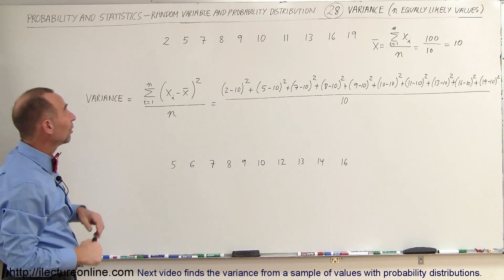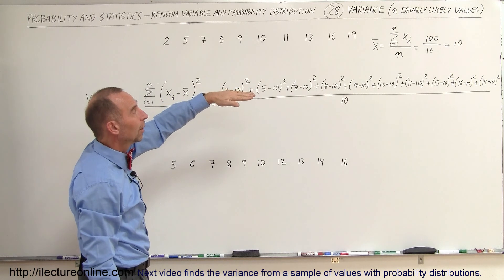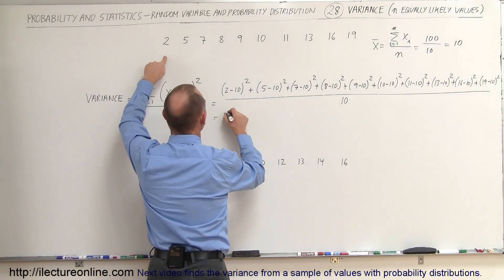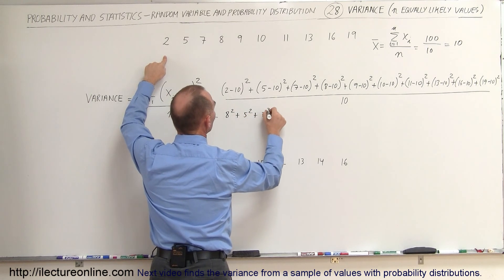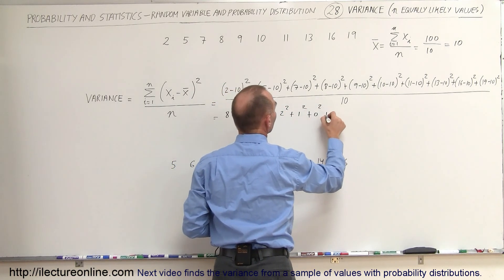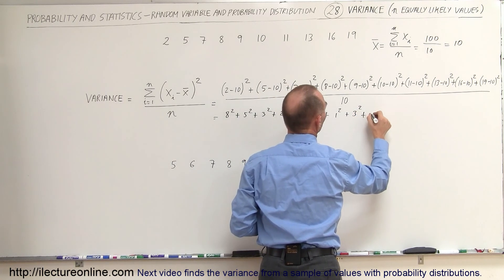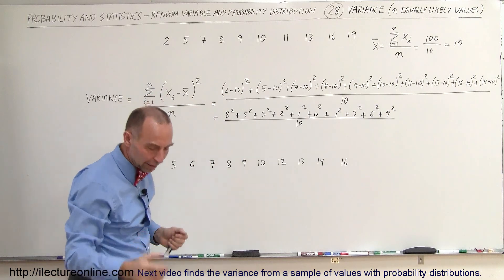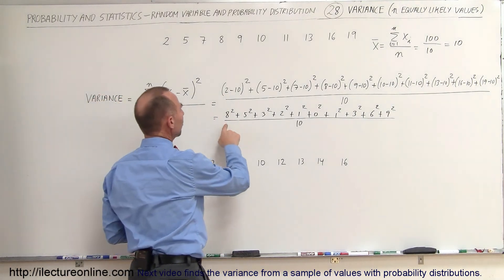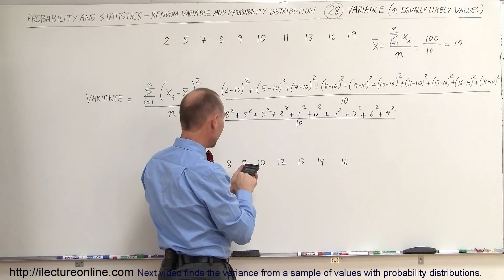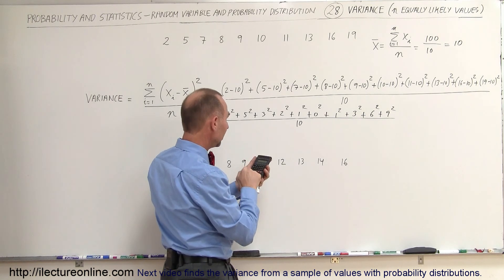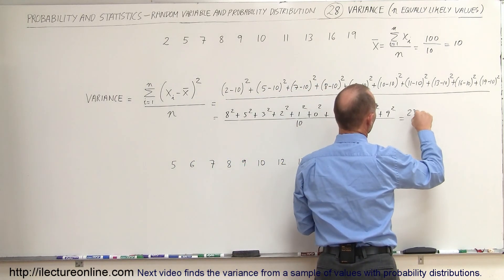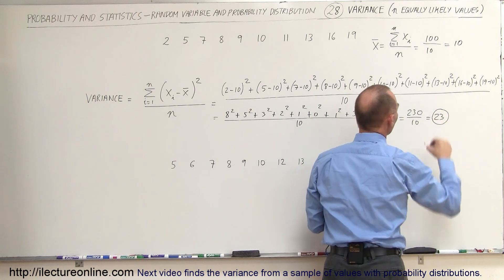To make it easier, since you know the average, 2 minus 10 is negative 8, and since we're squaring the differences the negative sign doesn't matter. So this simplifies to 8 squared plus 5 squared plus 3 squared plus 2 squared plus 1 squared plus 0 squared plus 1 squared plus 3 squared plus 6 squared plus 9 squared, all divided by 10. That gives us 64 plus 25 plus 9 plus 4 plus 1 plus 1 plus 9 plus 36 plus 81 equals 230, divided by 10, which is 23. That's the variance.